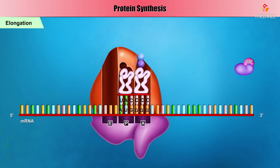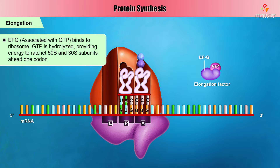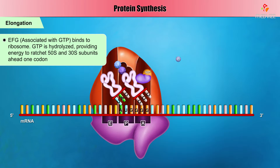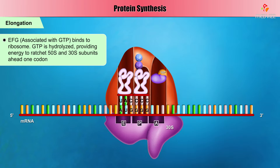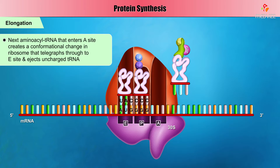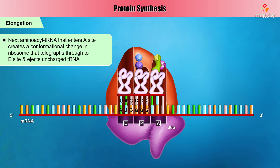The third step is called translocation. An elongation factor called EFG, associated with GTP, binds to the ribosome. The GTP is hydrolyzed, providing the energy to ratchet the 50S and 30S subunits ahead one codon. This maneuver opens up the A site and slides the uncharged tRNA into the last site, called the E or exit site. The next aminoacyl tRNA that enters the A site creates a conformational change in the ribosome that telegraphs through to the E site and ejects the uncharged tRNA.